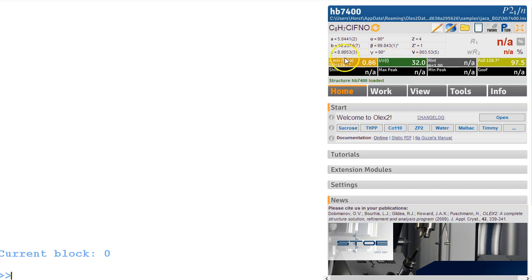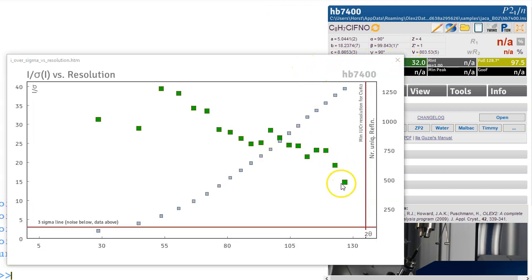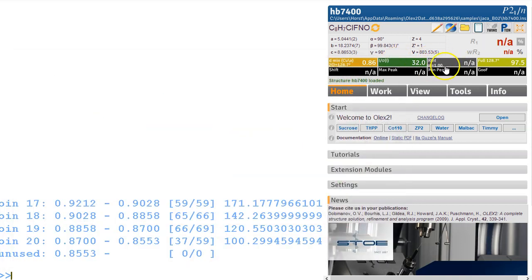Now we have I over sigma is quite strong and for some reason it stops just before it reaches the IECR minimum resolution. It's a bit strange. Also it's merged data so this is why we don't have an R-int. It shouldn't really happen, there's no reason why there should ever be merged data anymore.